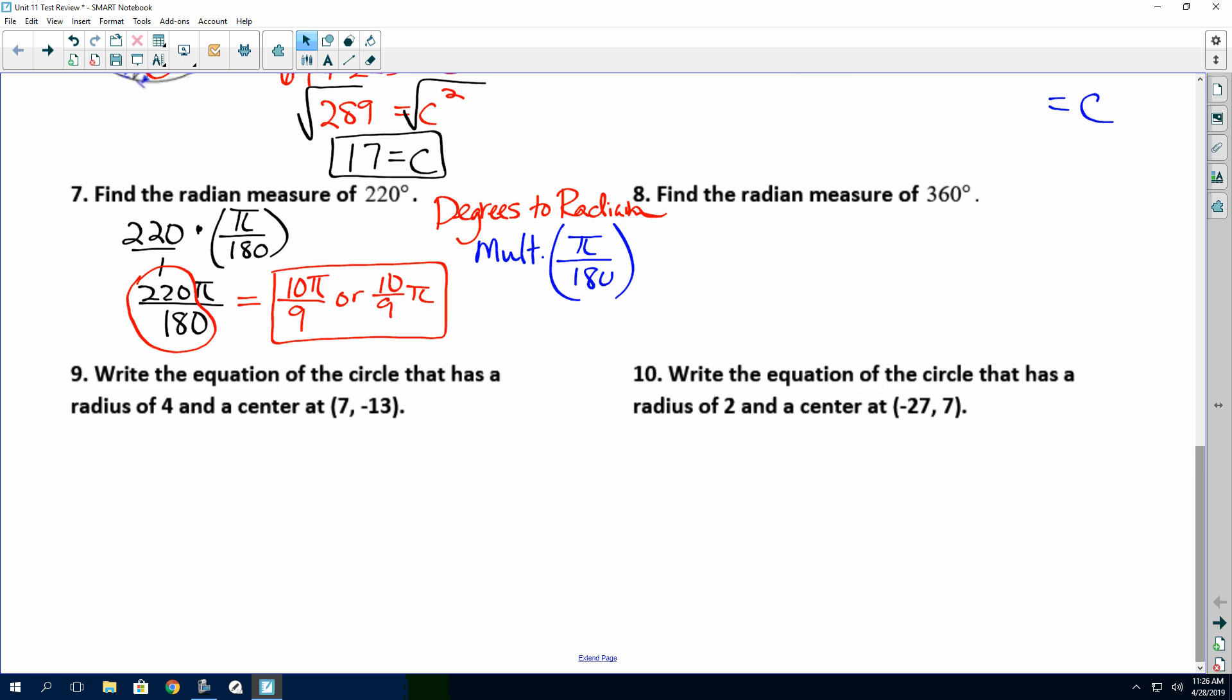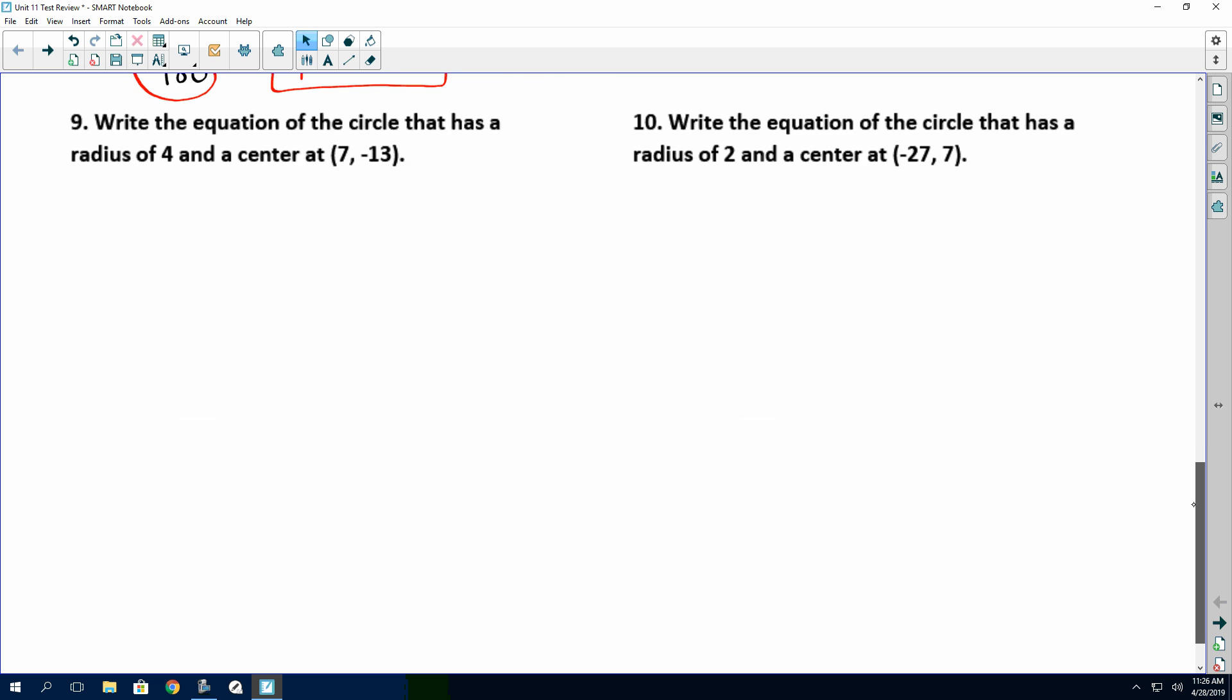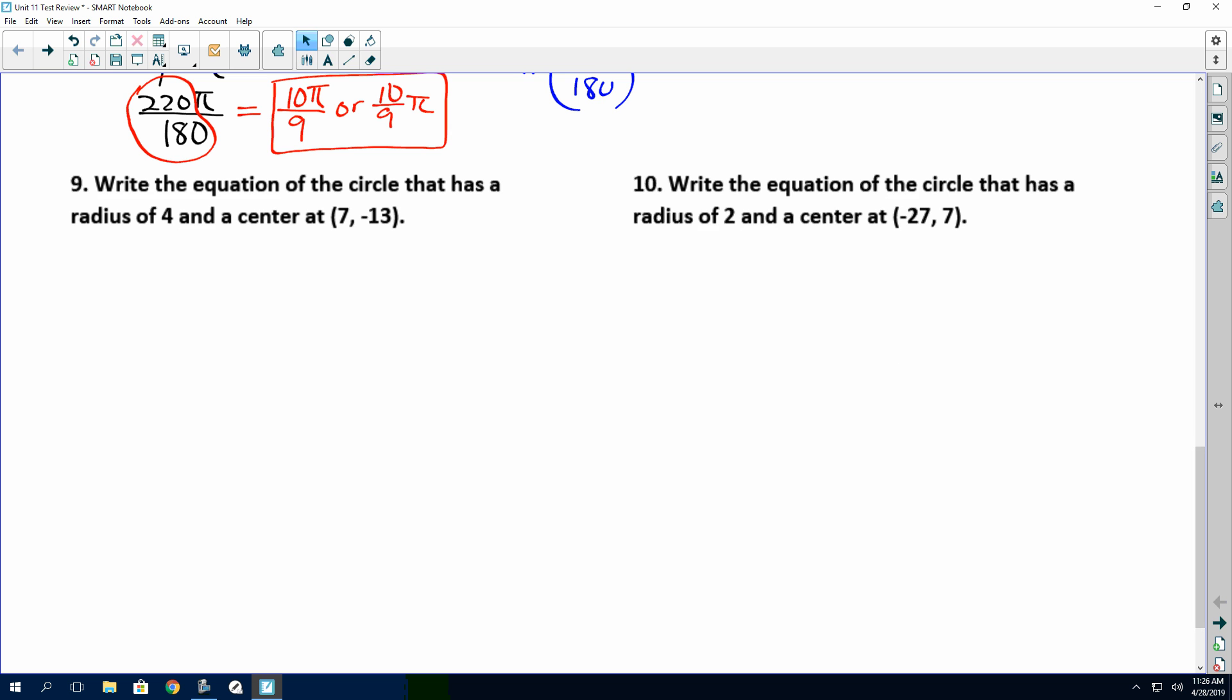Now, on the last problems here, 9 and 10, they want you to write the equation of the circle. So the equation of the circle has this form: x minus h parenthesis squared plus y minus k parenthesis squared equals r squared. This is what we did on our, I believe, it was yellow, sorry, our yellow notes.